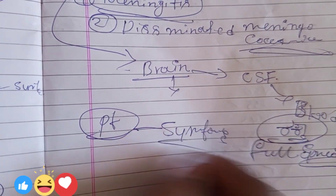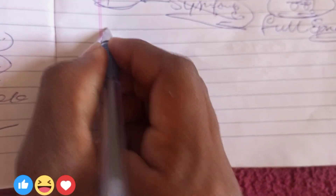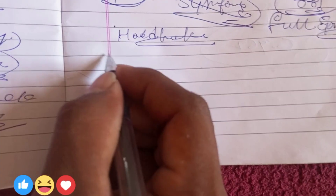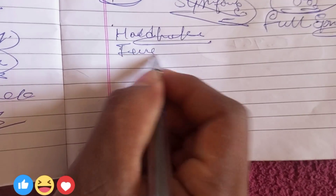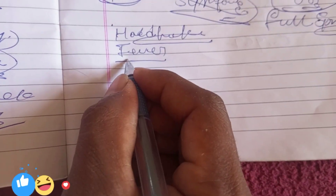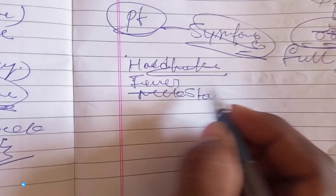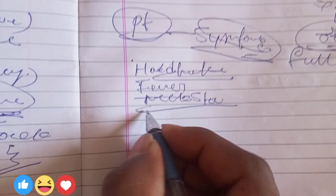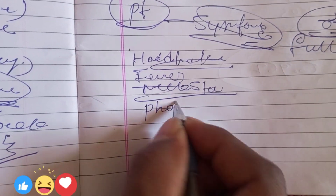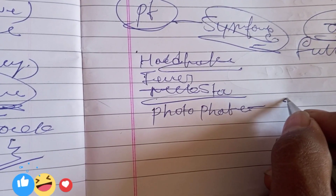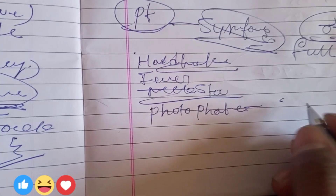Patient symptoms: neck stiffness, photophobia — sensitivity to light.